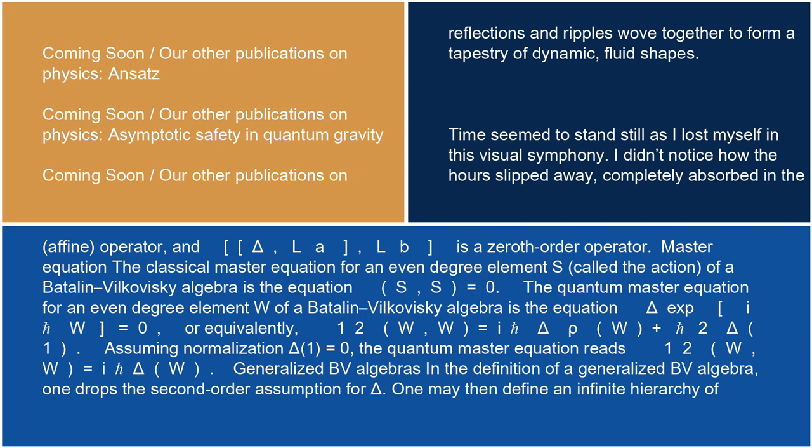Master equation: the classical master equation for an even-degree element S, called the action, of a Batalin-Vilkovisky algebra is the equation (S, S) equals 0. The quantum master equation for an even-degree element W is the equation delta(exp(iW)) equals 0, or equivalently one-half (W, W) equals i·delta_rho(W) plus 2·delta(1). Assuming normalization delta(1) equals 0, the quantum master equation reads one-half (W, W) equals i·delta(W).